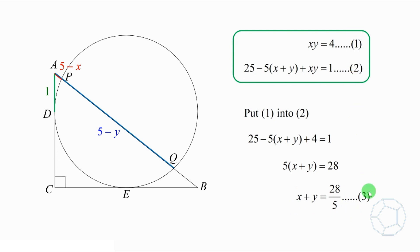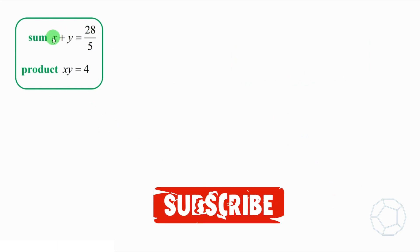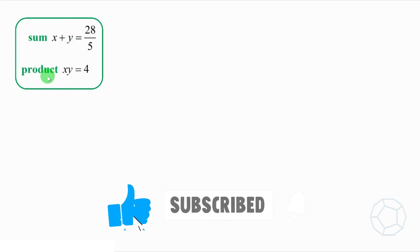With simultaneous equations, we can solve the values of X and Y. But it is not necessary. Why? Because we have the sum X plus Y and the product X times Y. What is our goal in this question? It is the length of PQ. That's the difference X minus Y. Then we can play some tricks with the perfect square identities.